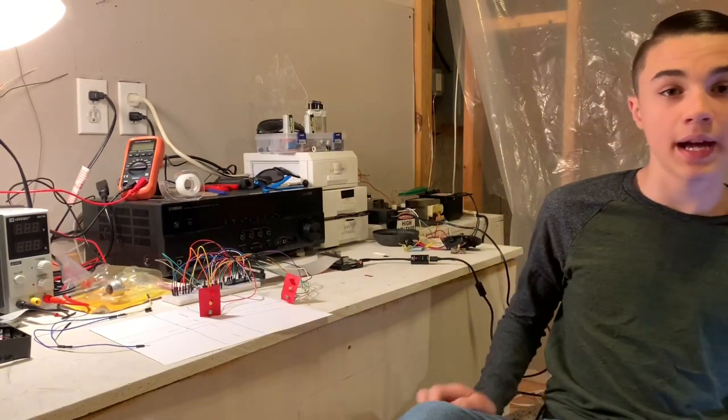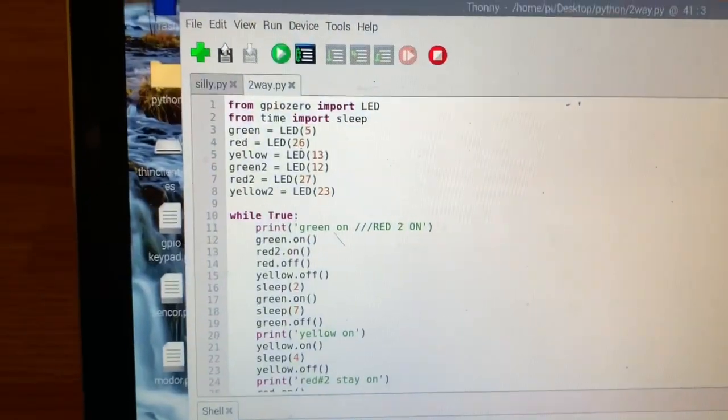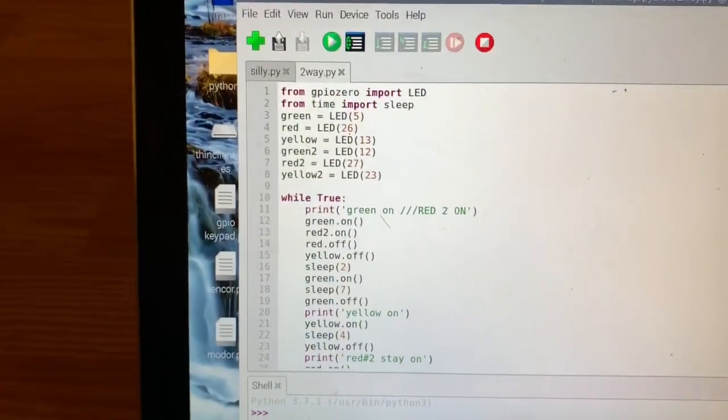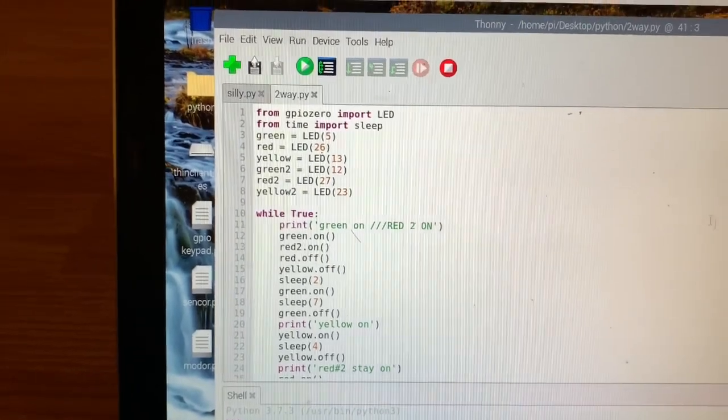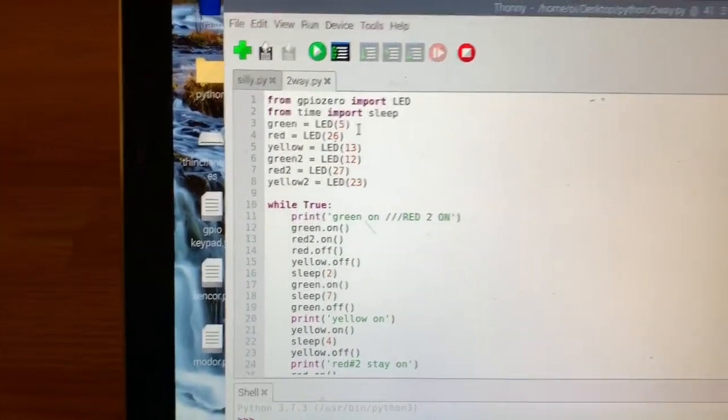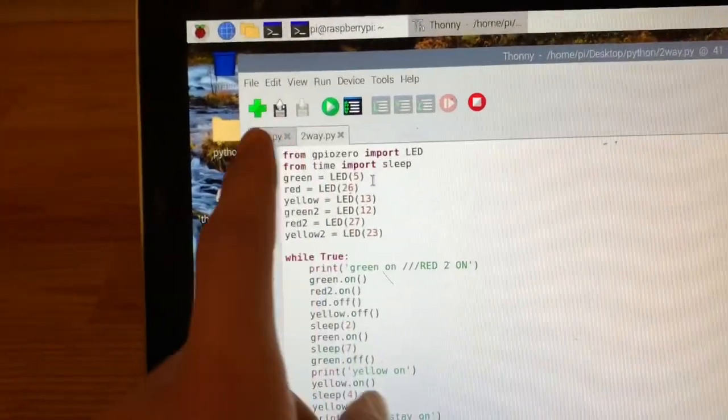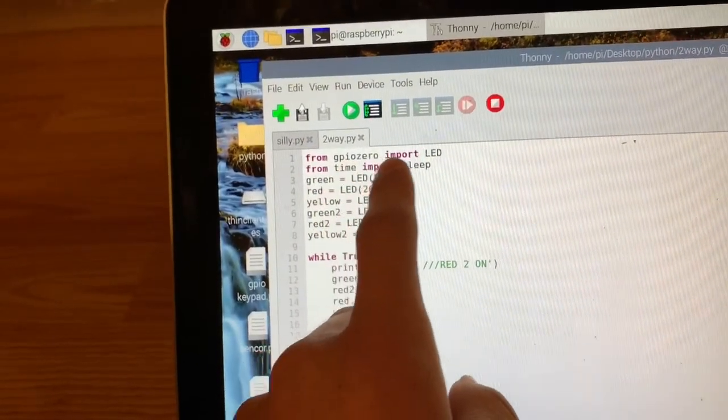Alright everyone, so I have it pulled up. Let's get a real quick close-up on how I wrote the script and I'll explain it a little bit in depth. The way this script works is it's very simple. It's basically just a repeat of the last script of the single-way traffic light system with importing GPIO as LED and importing time.